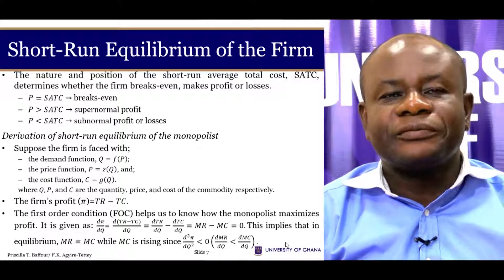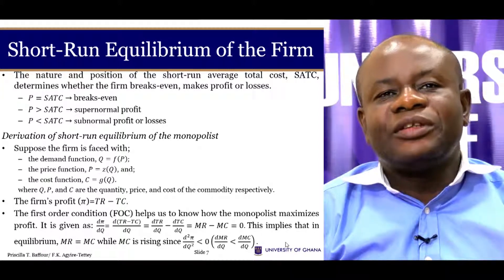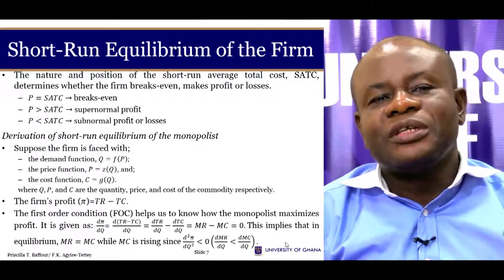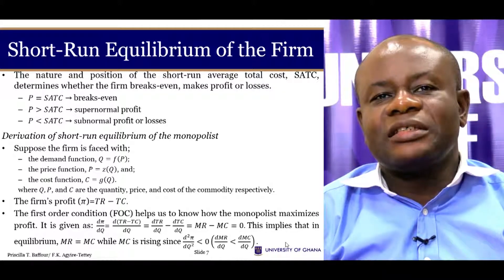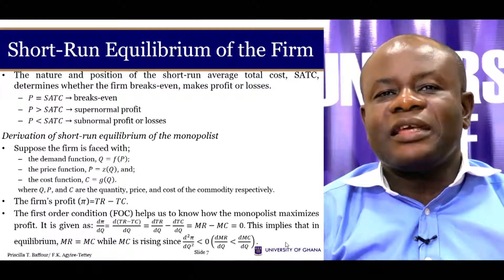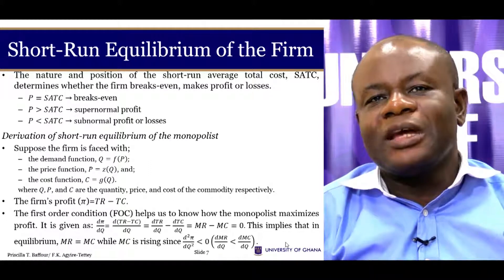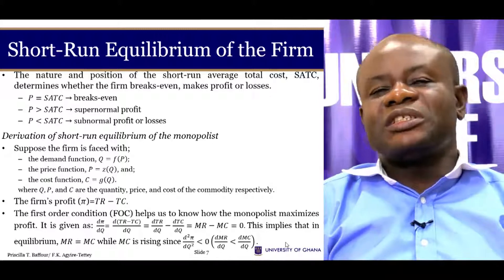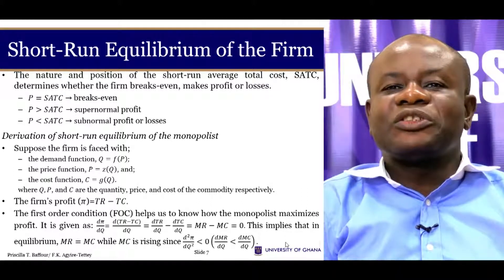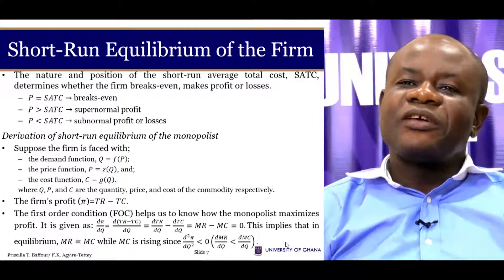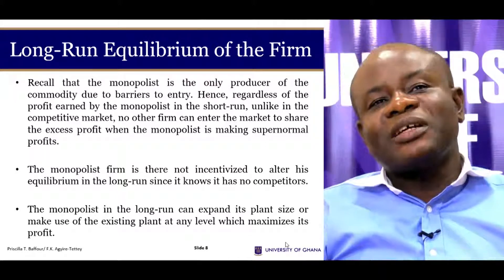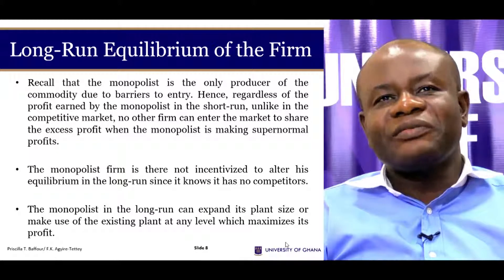Taking the first-order condition and setting it to zero gives us: d(pi)/dQ = d(TR)/dQ minus d(TC)/dQ, which is marginal revenue minus marginal cost equals zero. For profit maximization, the slope of the marginal cost curve must be greater than the slope of the marginal revenue. This profit maximization condition is the same as that of the perfectly competitive market.